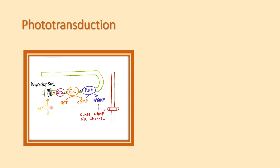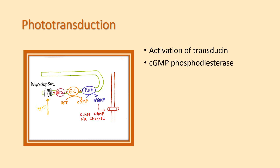When light falls on rhodopsin, it activates the G-protein transducin. Transducin then activates cyclic GMP phosphodiesterase, which converts cyclic GMP to 5'-GMP, thereby decreasing cyclic GMP levels. This closes the cyclic GMP-dependent sodium channels, preventing the entry of sodium from the extracellular fluid into the outer segment of the rod.